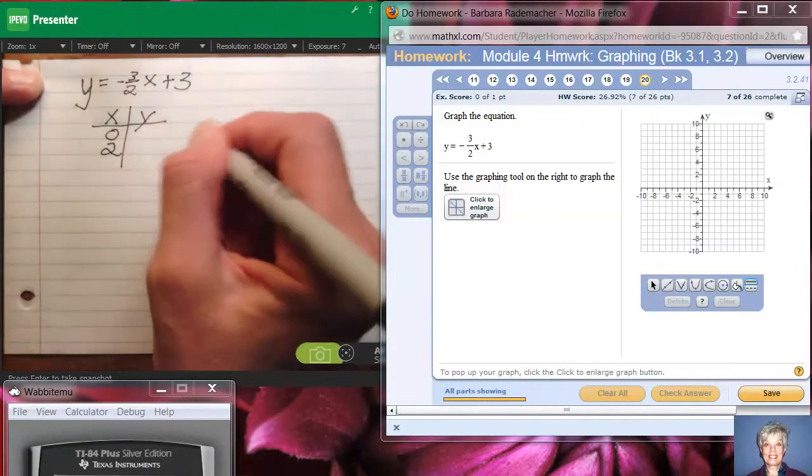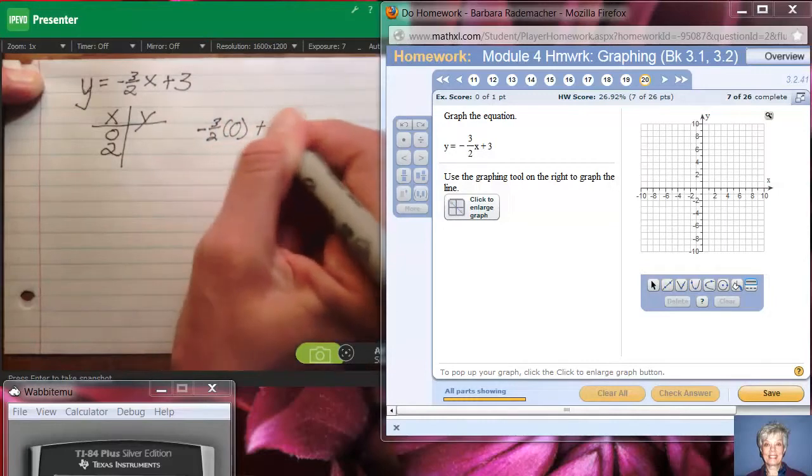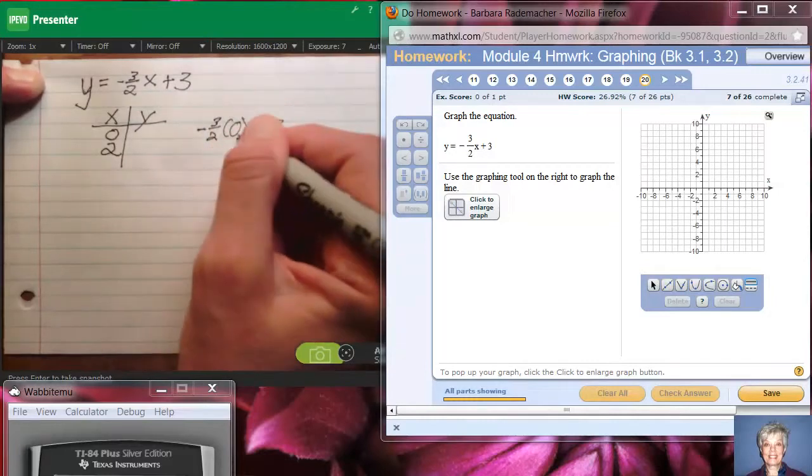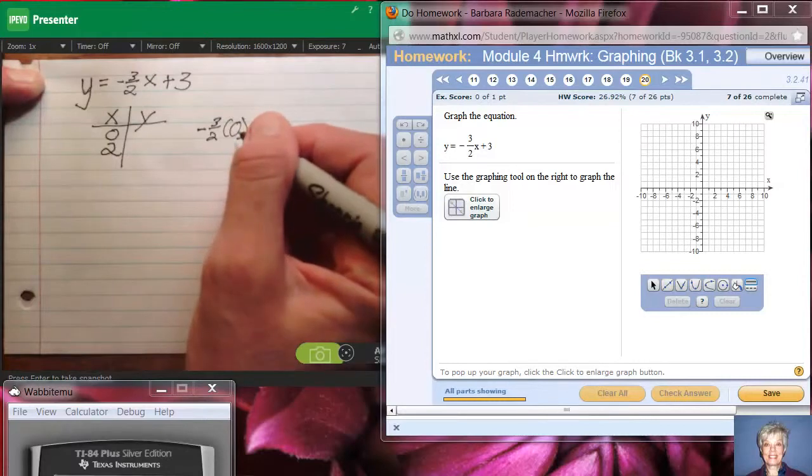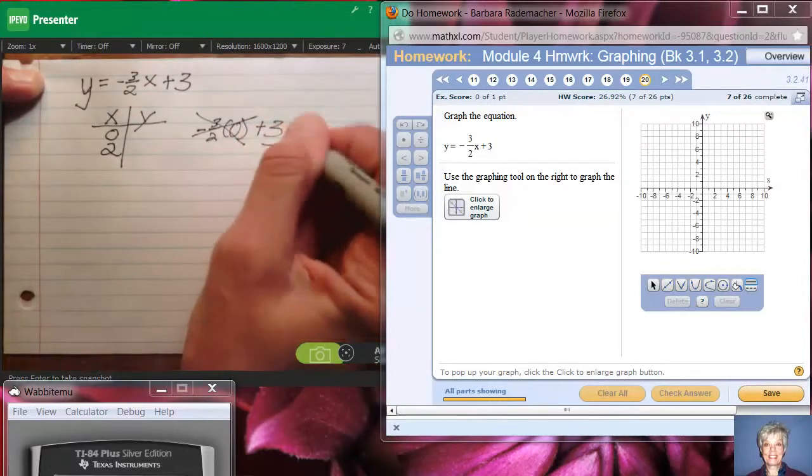Okay, now if I have -3/2 times 0 plus 3, what is -3/2 times 0? What is anything times 0? It's 0. So I'm left with a 3.